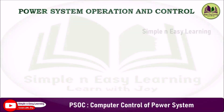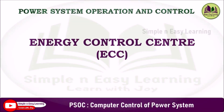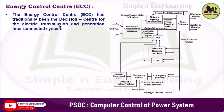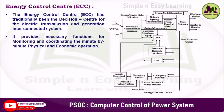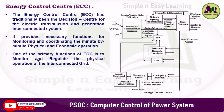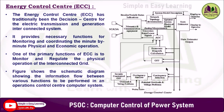In system operation and control, and computer control of power systems, today we are going to discuss about the energy control center. The energy control center has traditionally been the decision center for the electrical transmission and generation interconnected system. It provides necessary functions for monitoring and coordinating the minute-by-minute physical and economic operation. One of the primary functions of ECC is to monitor and regulate the physical operation of the interconnected system. This figure shows a schematic diagram showing the information flow between the various functions to be performed in an operations control center computer system.